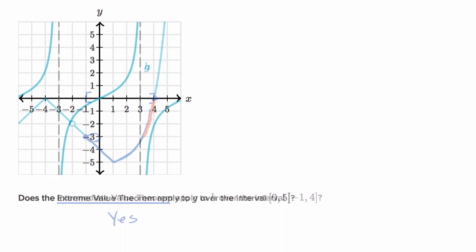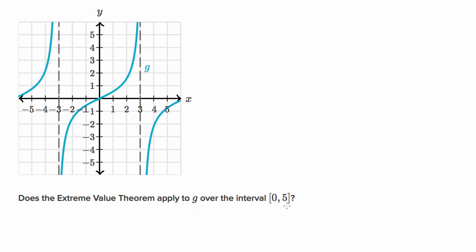It actually does take on every one of those values in this part of the curve. Let's do another example. We're asked: does the extreme value theorem apply to g over the closed interval from zero to five? Before we even think about what the extreme value theorem says, we just have to remember that, just like the intermediate value theorem, it only applies over closed intervals where the function is continuous over the entire interval.